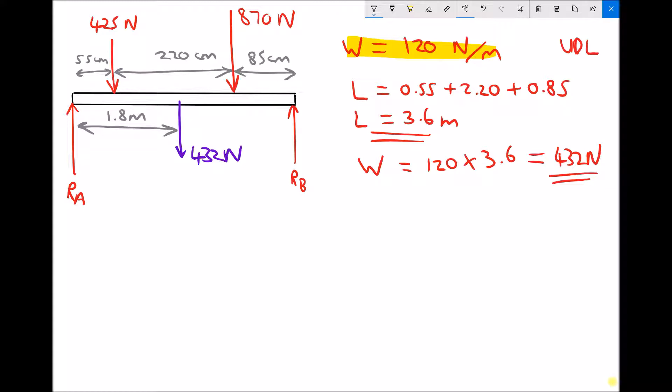Now once we've added the weight on that diagram, everything else is the same. So we're going to begin with our first condition. We're going to take moments about the left-hand pivot, about A. And we're going to say that the clockwise moments equals the anti-clockwise moments. And as a reminder, I'm going to put in brackets about A.